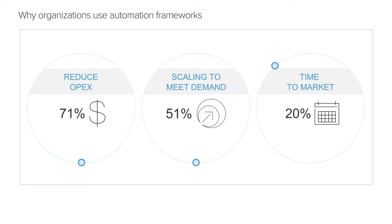At F5, we've built modern, open-source automation tools to enable DevOps, SecOps, and NetOps to work together to deploy secure, fast, and highly available applications in a simple and repeatable way. Let's take a look at how this works in the context of the application automation lifecycle.